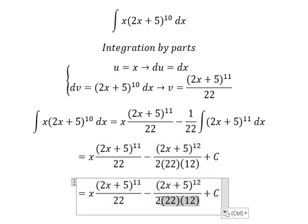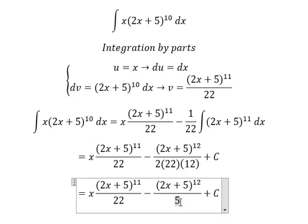We can calculate: 22 times 12 equals 264, so the denominator is 528. The final answer is x(2x+5)^11/22 - (2x+5)^12/528 + C. Thank you for watching.